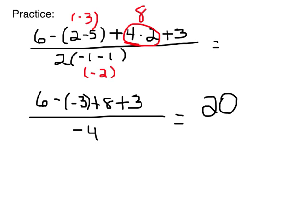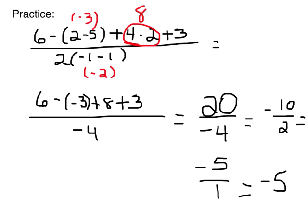So on the top I have 20, and on the bottom, negative 4. And I can reduce that to negative 10 over 2, or negative 5 over 1. Or I could just say negative 5. Alright, good job. I will see you back next time for lesson 96.